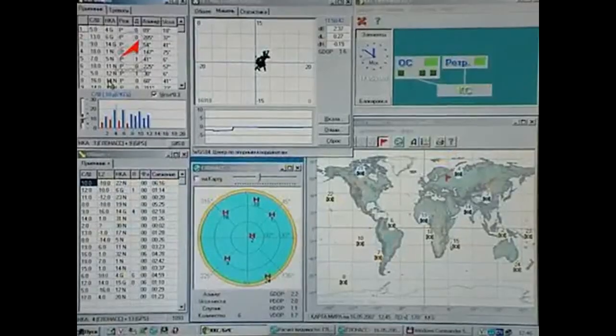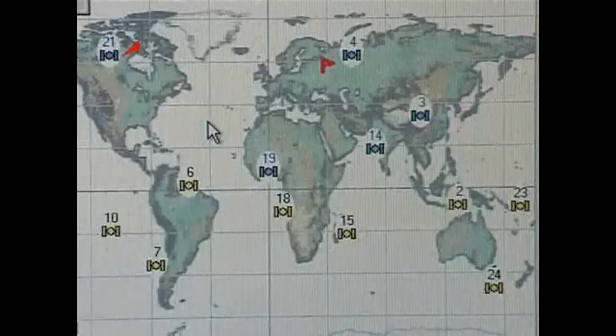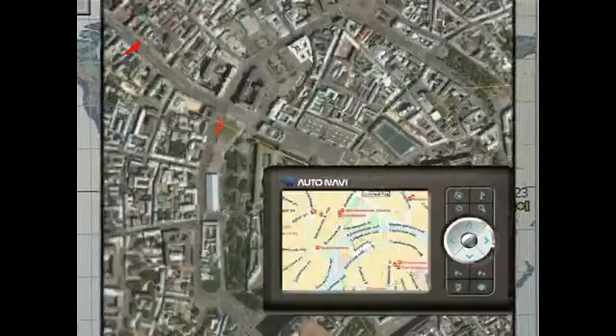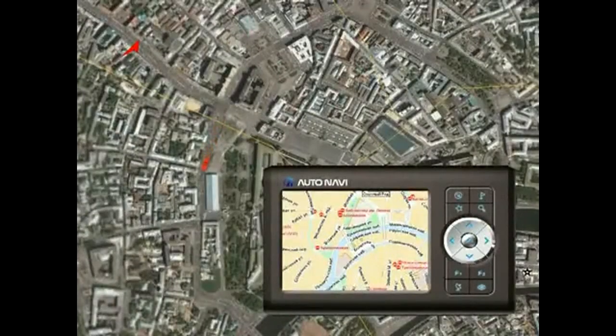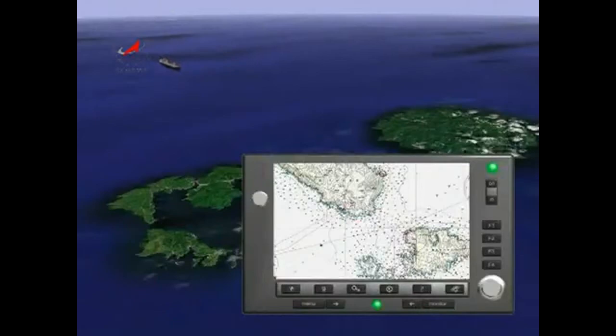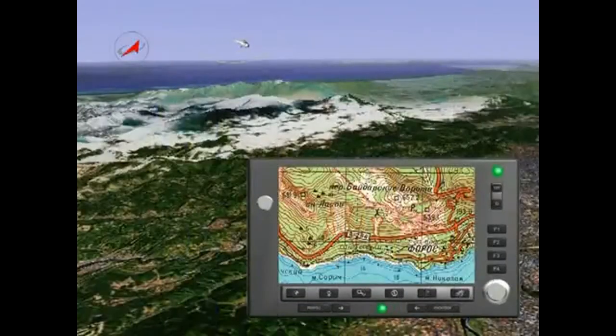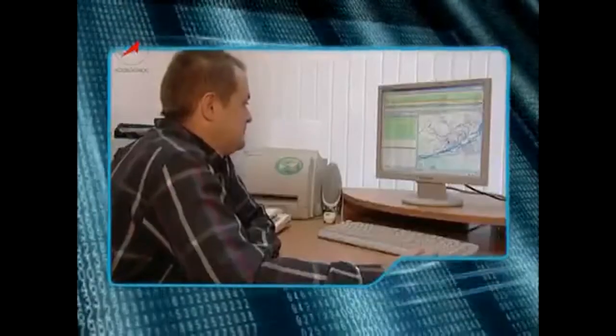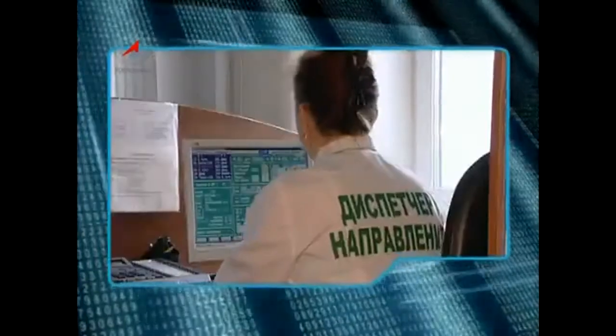Nowadays, the Russian navigation satellite system GLONASS embraces the entire globe. It can be used on the ground, on the sea, in the air, and in space. Access to the system's civil signals is granted without any restrictions.